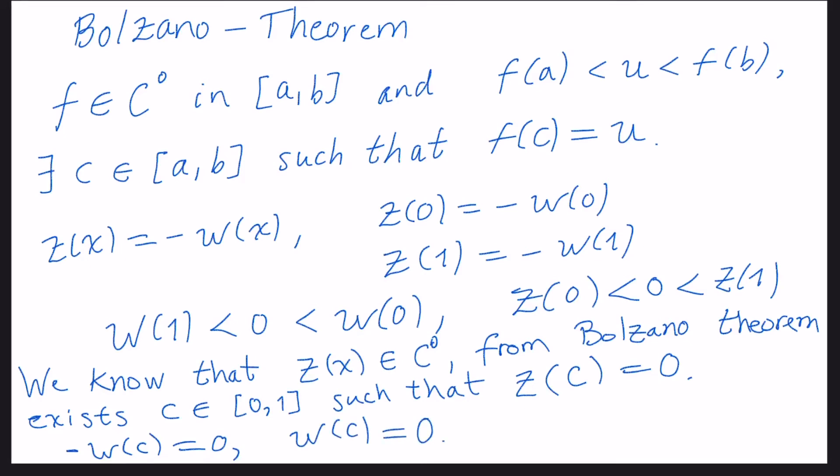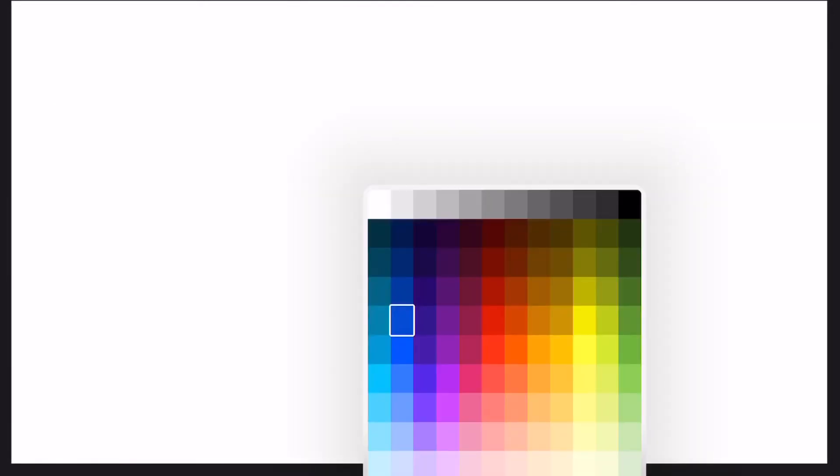Now let's take this last statement. So w(c) is equal to 0 for c, we don't know which value of c, but we know it exists, and the existence is guaranteed by the Bolzano theorem. For c that belongs to [0,1], the interval is closed.